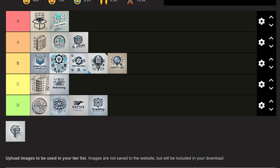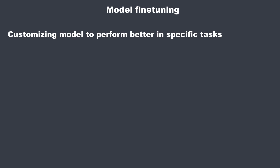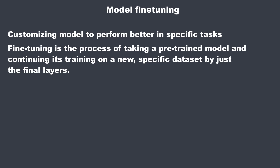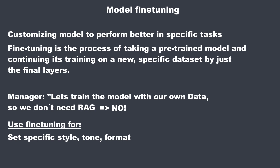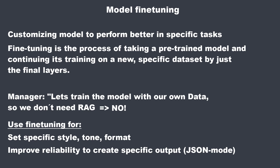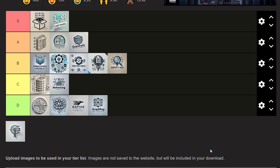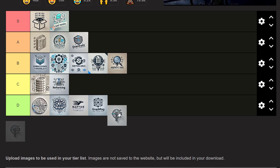The last concept is model fine-tuning — customizing a model to perform better in specific domains by continuing to train the last layers of a neural network with new data. It's often misunderstood. People say 'we'll just fine-tune a model with all our documents so the model knows the information' — but that's what RAG is for. Fine-tuning should be used for setting style, tone, or format; improving reliability of desired outputs; correcting failures on complex prompts; and handling edge cases. For building a great chat application, you almost never need it. Fine-tuning for a chatbot is D tier.